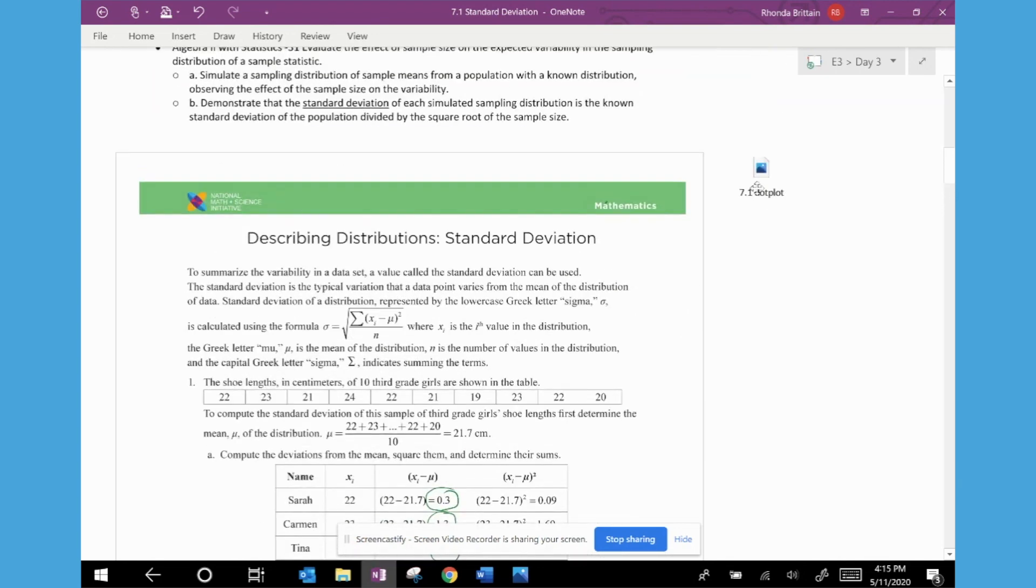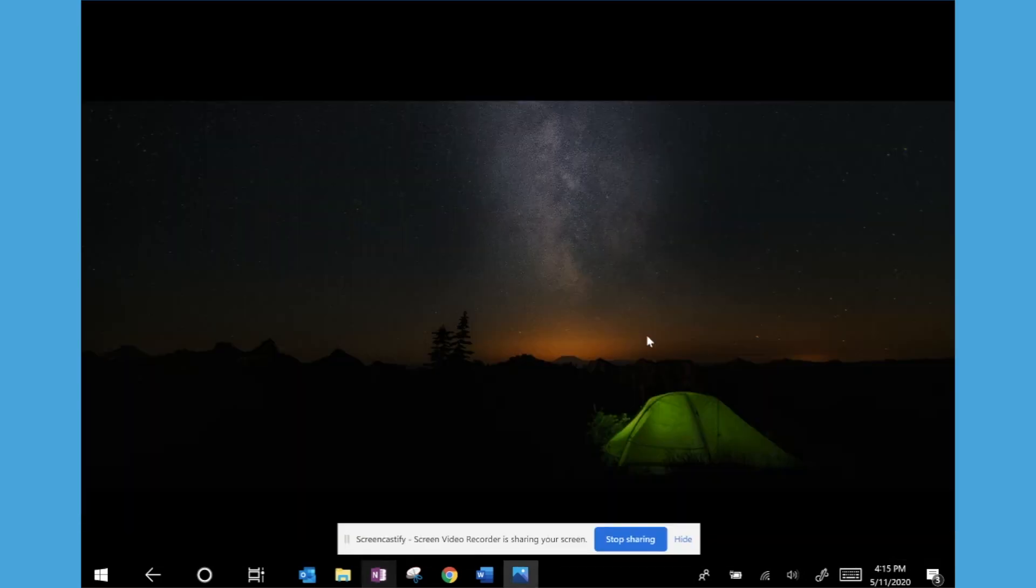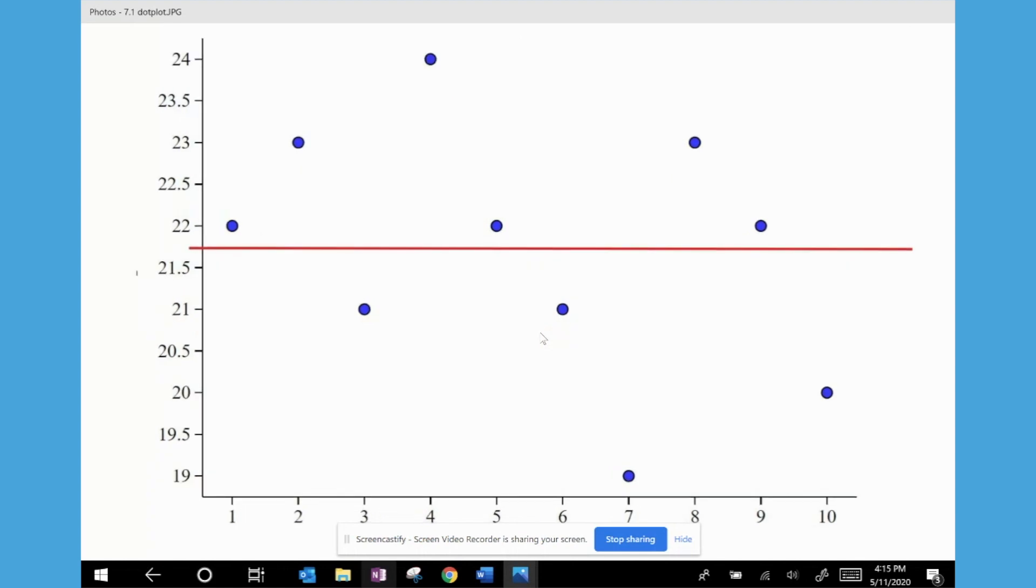So what I want to do is look at how this data is organized. This is actually a scatter plot of all of the girls. So I have the 10 girls and each of their data values. So for example, we have Sarah and her data value is 22. And so we calculated that her deviation was here and that was 0.3. So that means she's above the mean. So the mean is actually the line in red, 21.7. You can see that some data values are above and some are below.